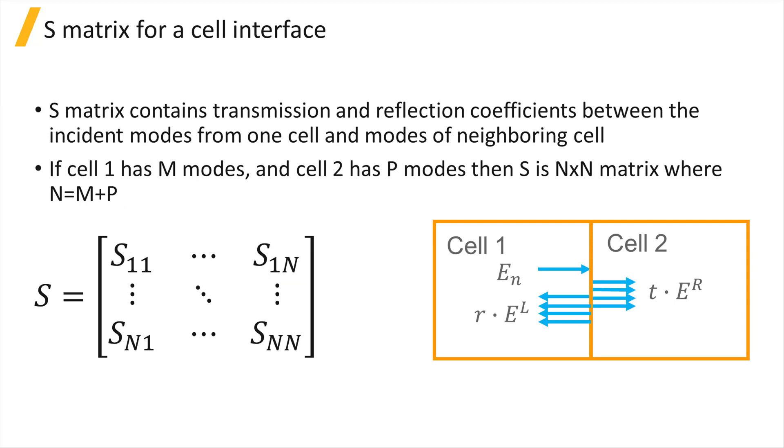During the propagate step of the simulation, the scattering matrices, or S matrices, which contain the transmission and reflection coefficients are formulated. There will be an S matrix for each cell interface, and the S matrix will contain the reflection and transmission coefficients for each mode incident on the cell interface from the cells on either side.